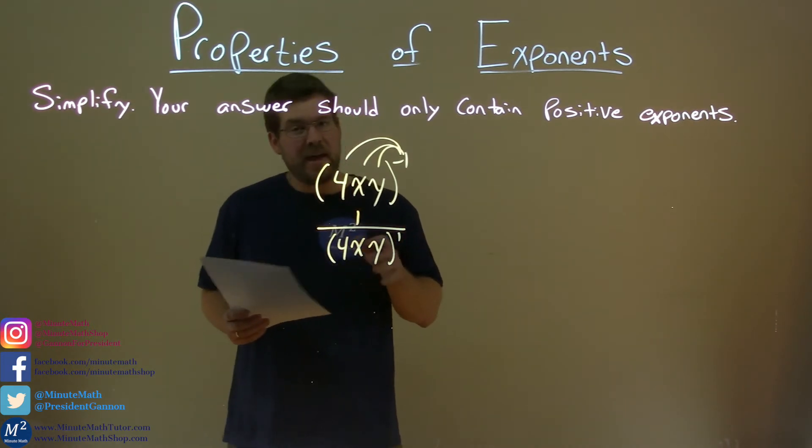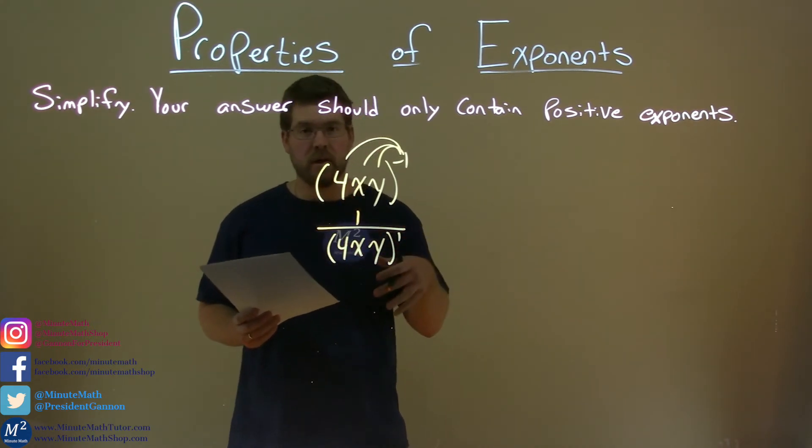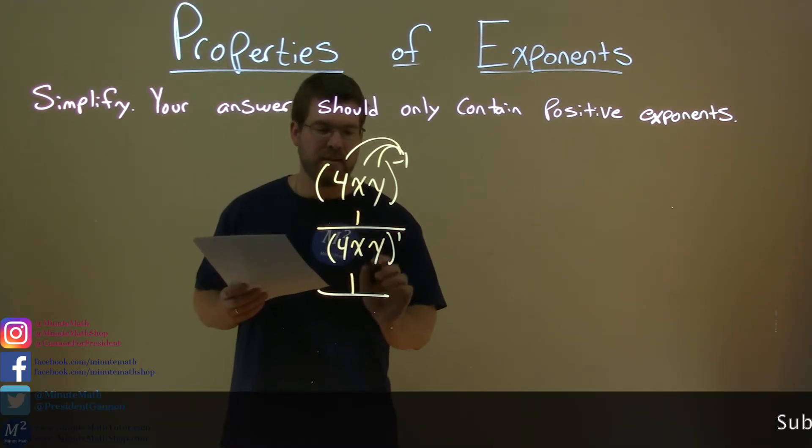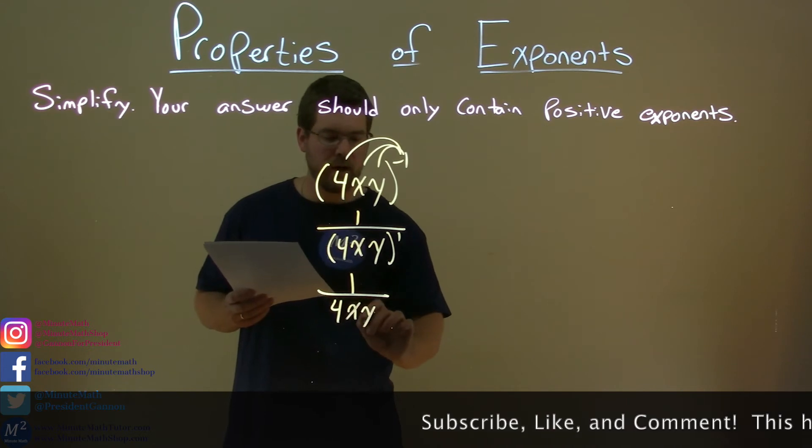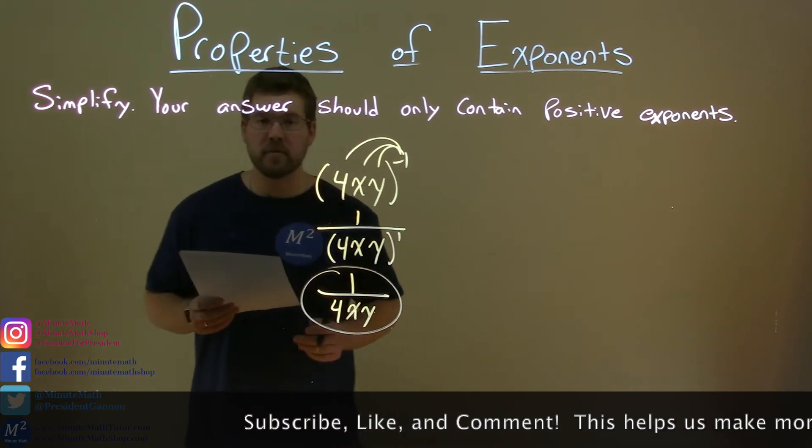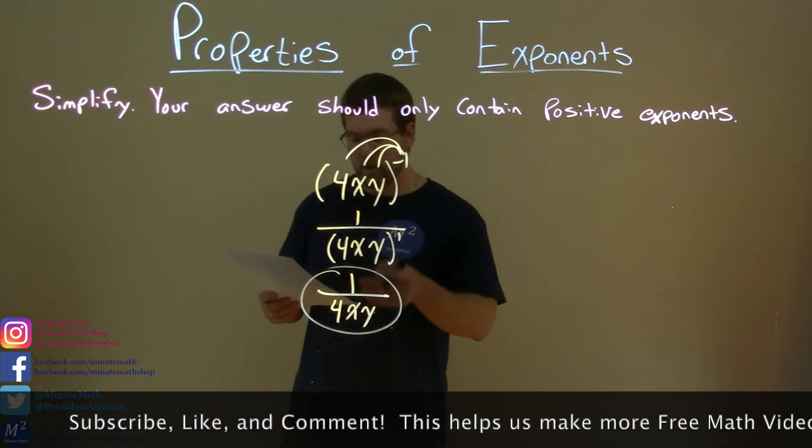And then from there, anything raised to the first power is itself. So we can simplify this again and not show the exponent. And we have 1 over 4xy, and there we have our final answer. Just 1 over 4xy.